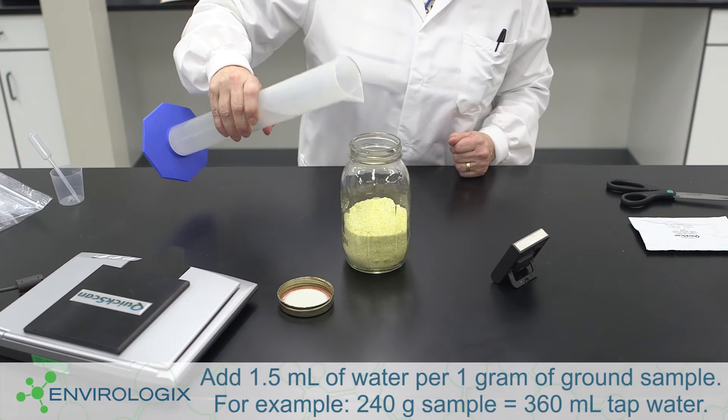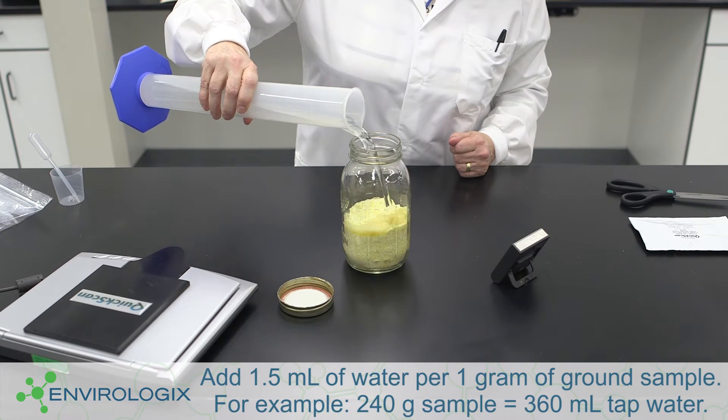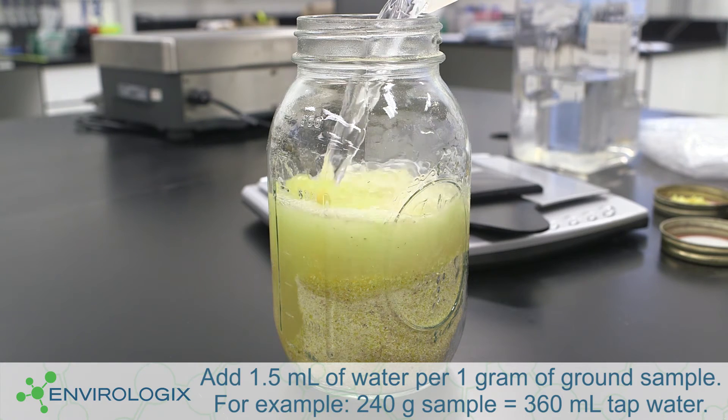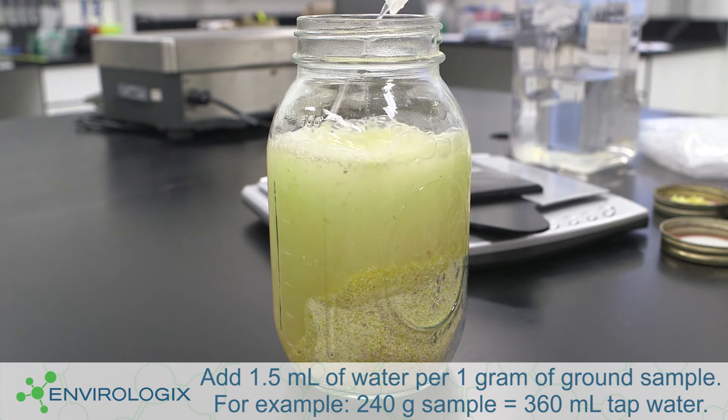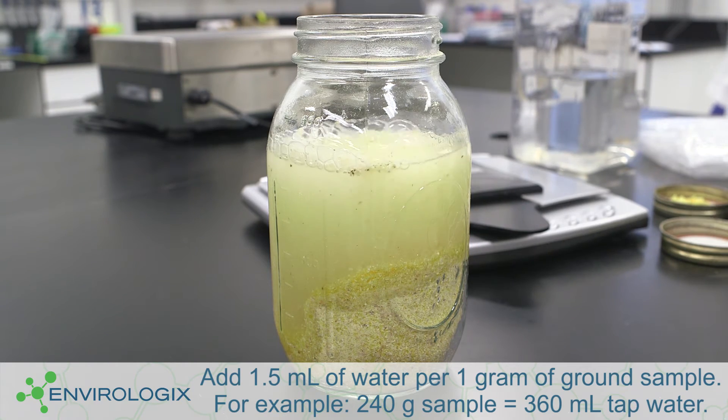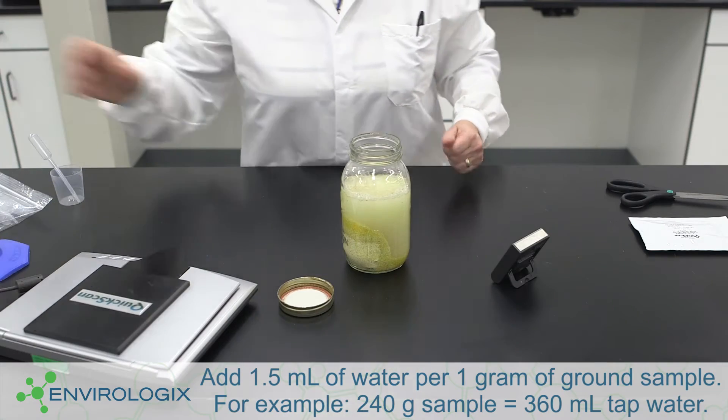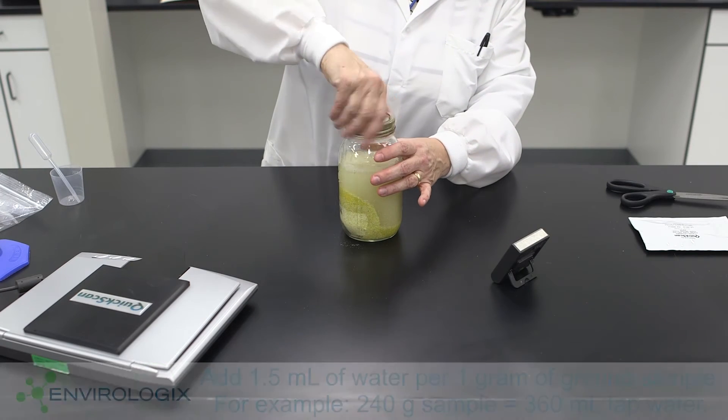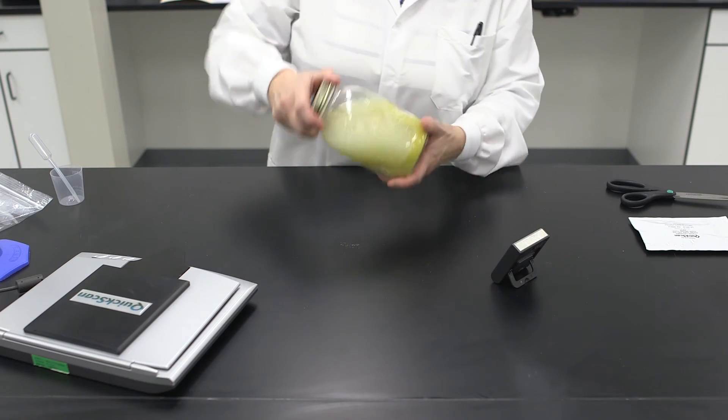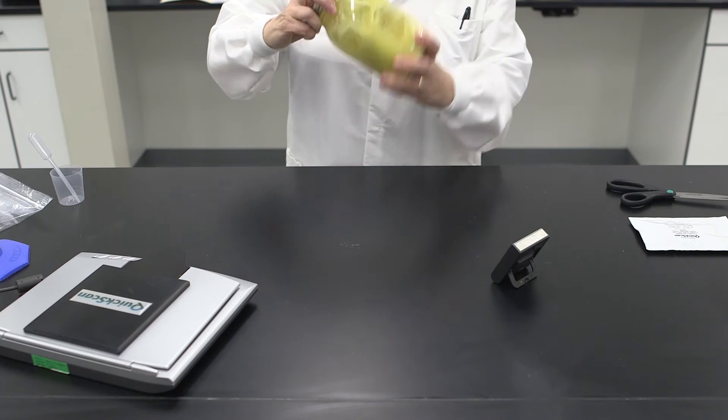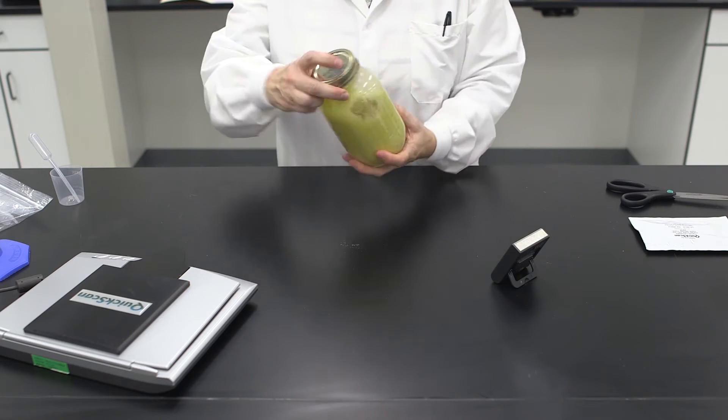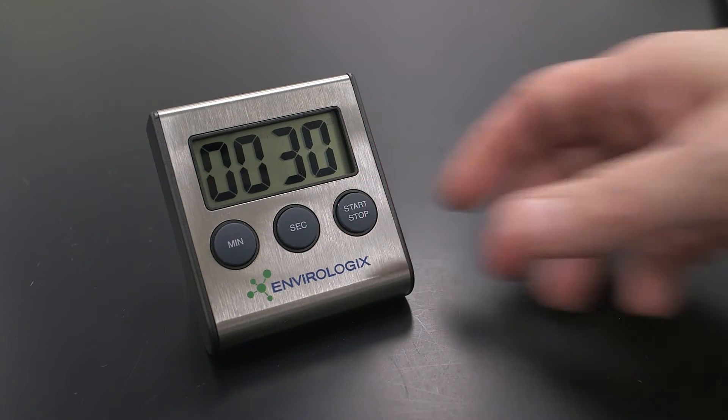Add tap water to the ground corn sample. Seal the container and shake it until the entire sample is wet. Continue to shake vigorously by hand for 30 seconds.